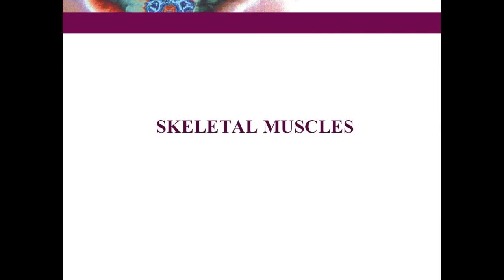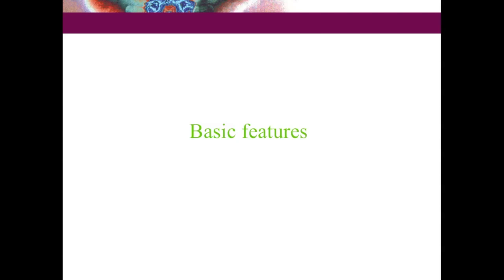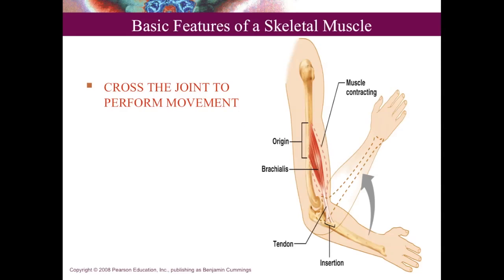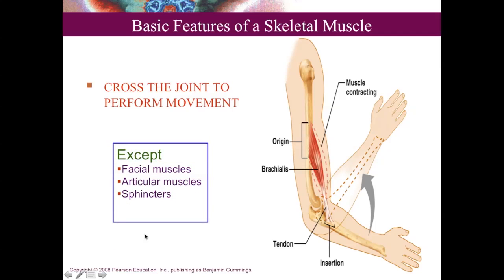Now we will study skeletal muscle in detail. Skeletal muscle performs movement at the joints of the body, and to do so, the muscle must cross that joint. Exceptions include facial muscles, which attach to the skin of the face and produce facial expressions without crossing a joint, and certain articular and sphincteric muscles that also don't cross joints but still produce movement.